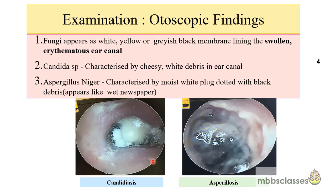In cases of otomycosis due to candidiasis, it appears as cheesy white debris in the ear canal. In cases of aspergillosis, they are characterized by a moist white plug or debris dotted with black dots — it appears like a wet newspaper look. These black dots, as you can see here, are the conidiophores of Aspergillus. These two pictures are the typical presentations of otomycosis due to candidiasis and aspergillosis respectively.